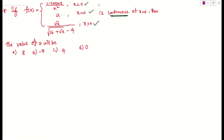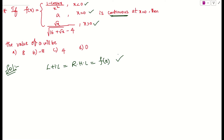They said that the function is continuous. When can I say a function is continuous? If the left hand limit exists and the right hand limit exists and they must be equal to the function value f(a). If all three values exist and are equal, we can say a function is continuous. They are telling that at x = 0 it is continuous, so we need to find the value of a.